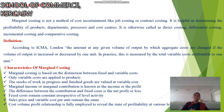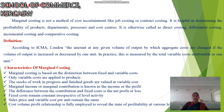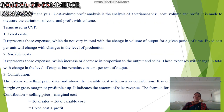Marginal income or marginal contribution is called as income or net profit. Fixed cost remains constant irrespective of the level of activity. The sales price and variable cost per unit remain the same. These are the characteristics of marginal costing.